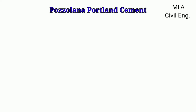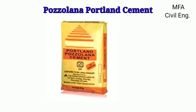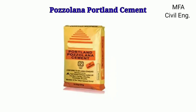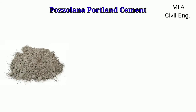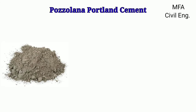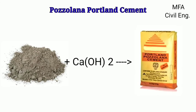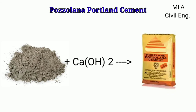Hello everyone, my name is Farzal and you are watching MFA Civil Engineering. Pozzolana is a very old construction material which was used even in Roman times. It does not have any cementation or binding properties, but in a finely ground form it reacts with calcium hydroxide to form a compound having a cementing property.